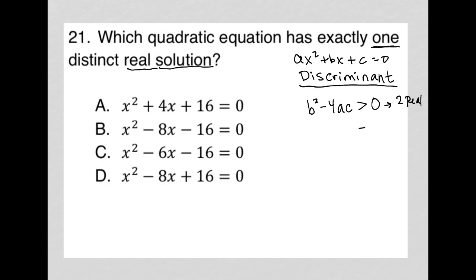If b² - 4ac is equal to zero, you will have one real solution, which is what we're looking for here. And if it is less than zero, you will have no real solutions, which basically means you'll have two imaginary.